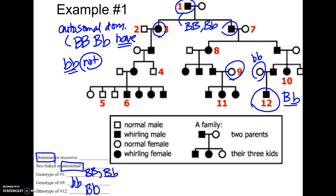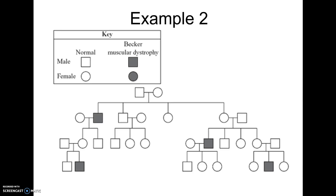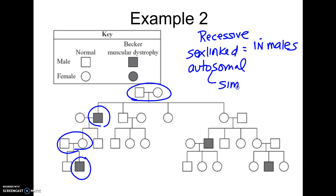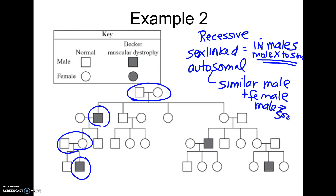I highly recommend you work on Mastering Bio — it's got some other examples. Now this next pedigree is skipping generations: notice no parent has it but a child has it, and neither parent has it but a child has it. So that tells us this is recessive. Once you know it's recessive, how do we tell sex-linked recessive versus autosomal recessive? Sex-linked recessive will typically be found in males, while autosomal recessive will have similar numbers of males and females. Notice only males seem to have this trait, so that would imply this is a sex-linked recessive trait.